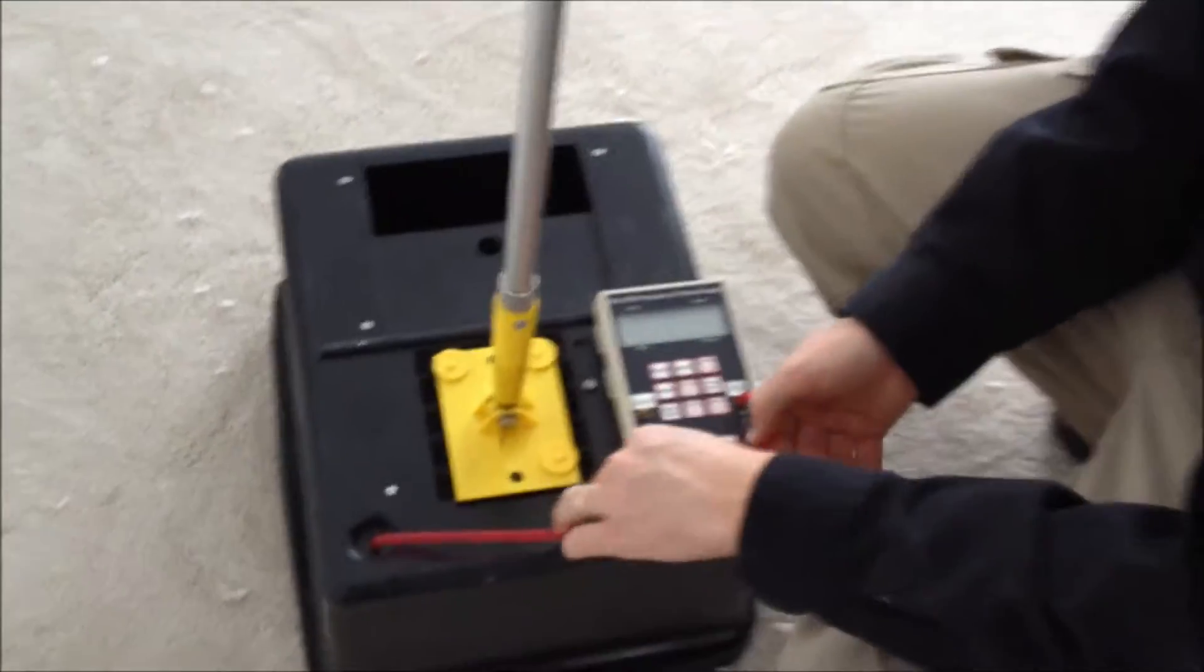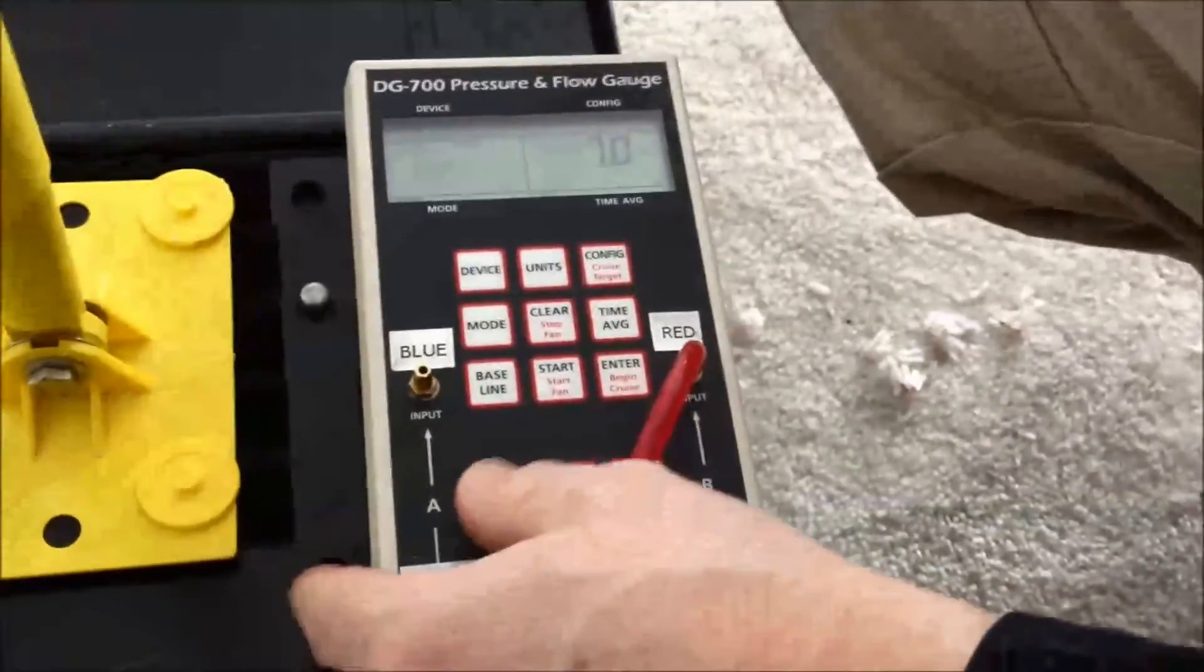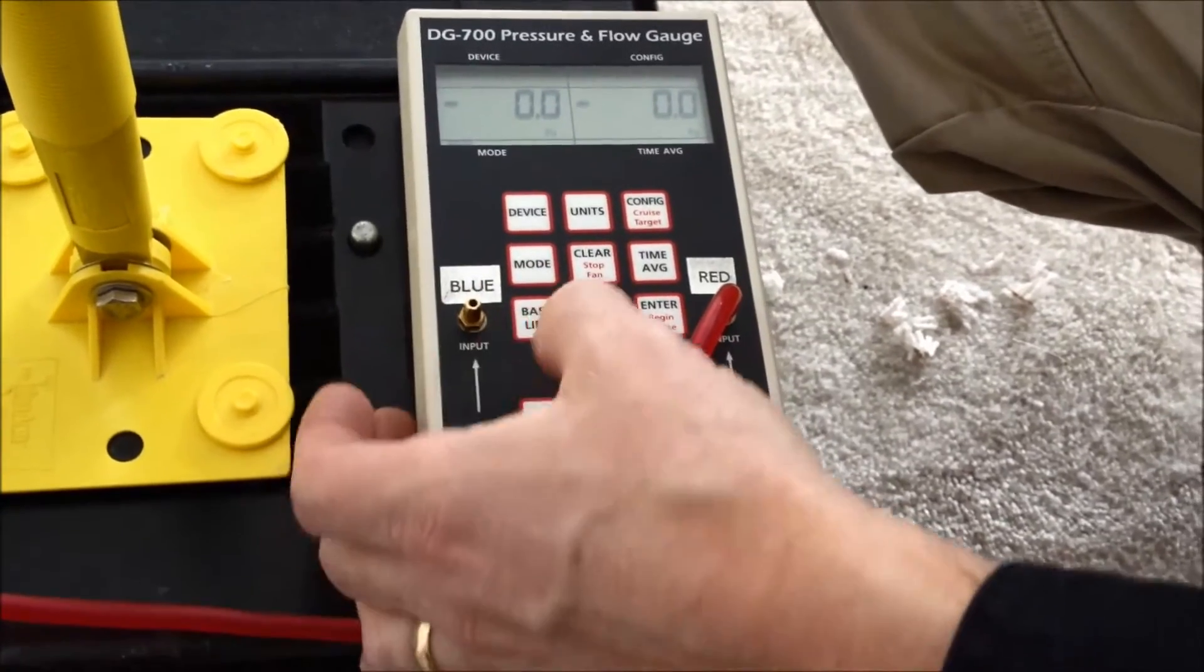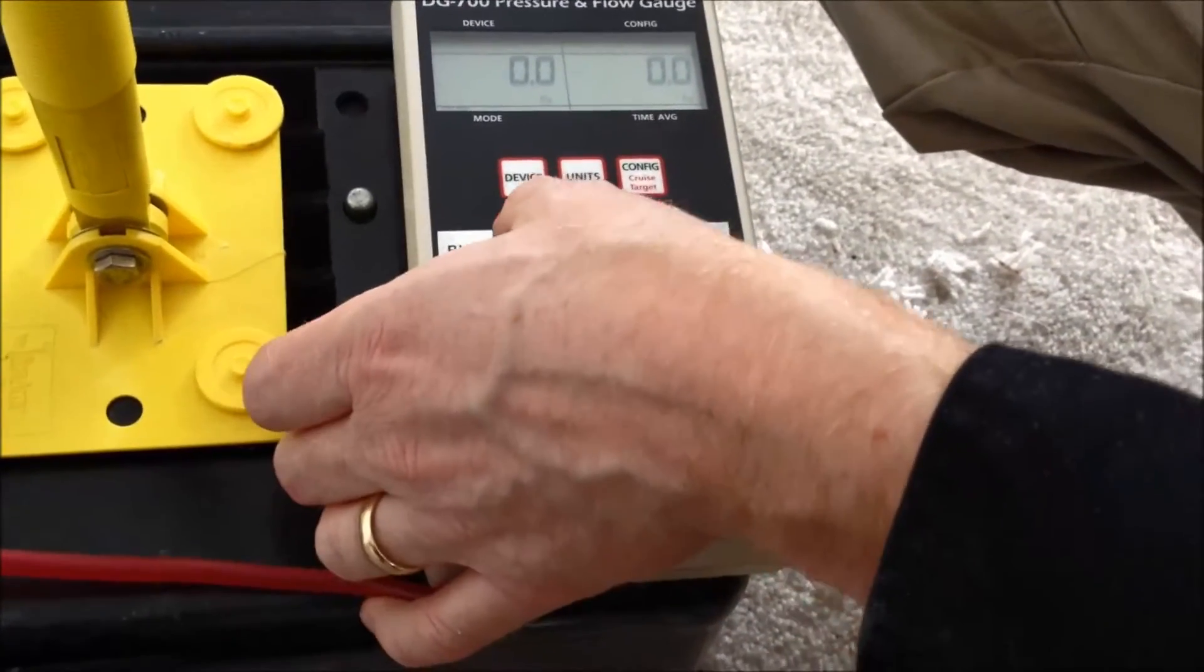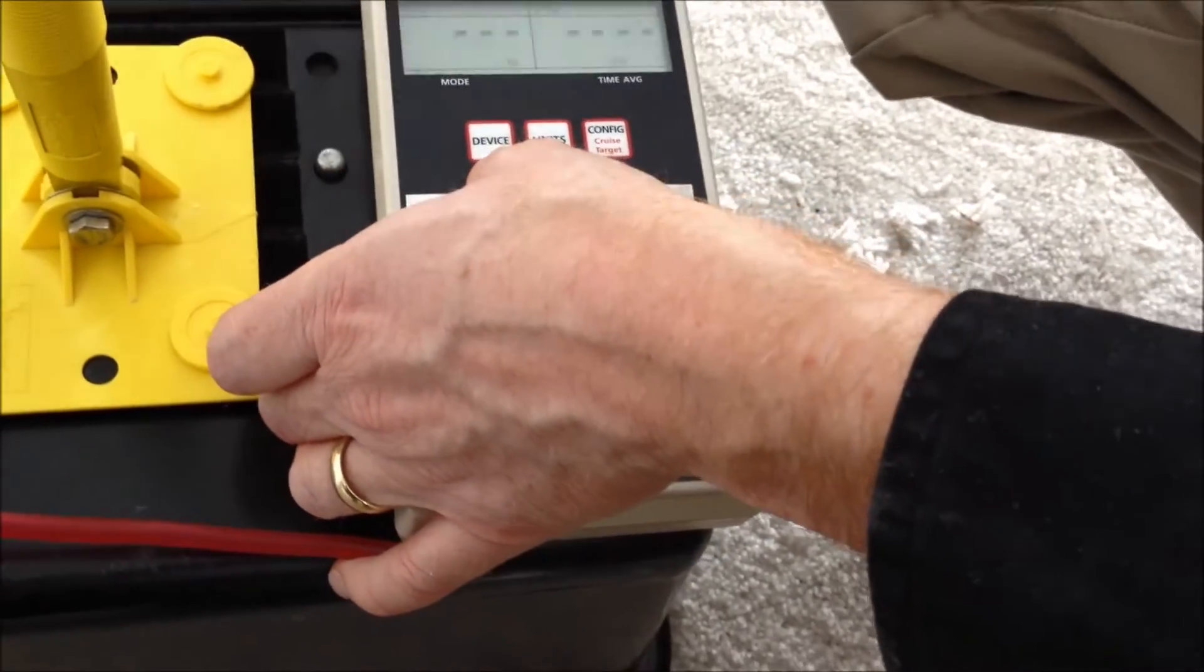So the settings for the gauge, if you want to zoom in on the gauge, we turn it on. And we're going to start. We might want to turn on the light because sometimes in the bathroom it might be a little bit dark. And we're going to go mode, device, config, and time average if we want to. So with mode, we want to be at pressure and flow. So it says PRFL.